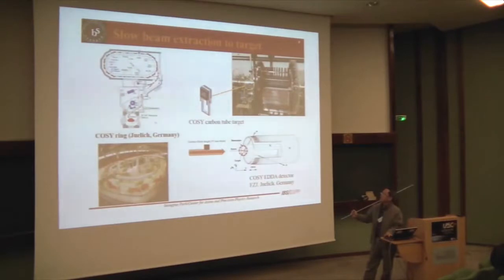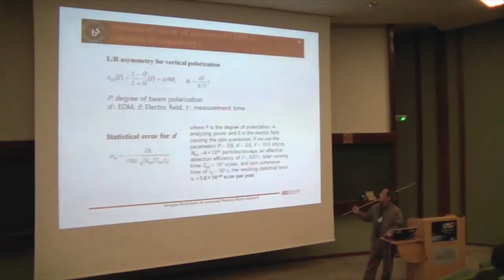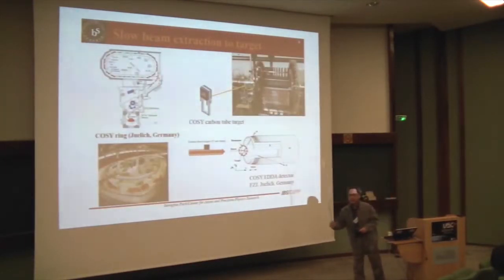This is the existing storage ring. I call it COSY in Germany. Here we have been testing all the EDM stuff here. It's deuteron, right? Yeah, this ring is for deuteron, yes. That's correct. For the proton case, if you want to use pure electric ring, you have to modify this. But we are trying to build a new ring. That's our plan. Not this one. This one is being used for the test of our experiment.